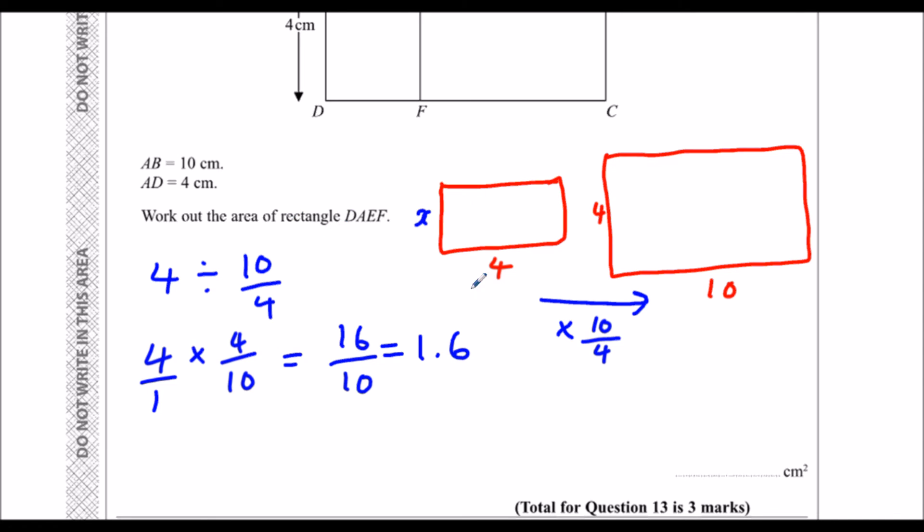We need to work out the area of it, so it's going to be one point six times four. Whenever I times by four, I'm going to double it and double it again. Double one point six is three point two, double three point two is six point four. So the area is six point four centimeters squared.